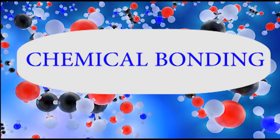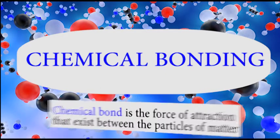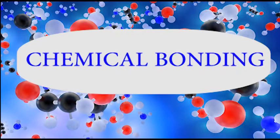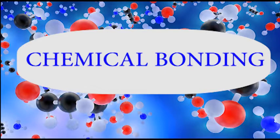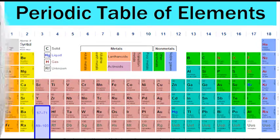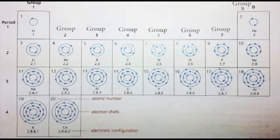In our last video, we looked at the concept and types of chemical bonding. We said that a chemical bond is the force of attraction that exists between the particles of matter — in brackets: atoms, molecules, and ions. The essence of chemical bonding is to bring stability to atoms, to make atoms stable. Looking at the periodic table, you realize that most atoms do not have a complete electronic configuration.